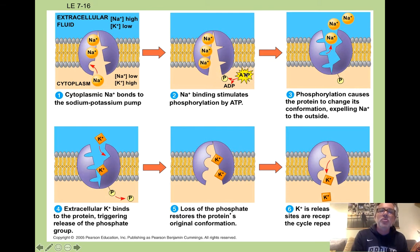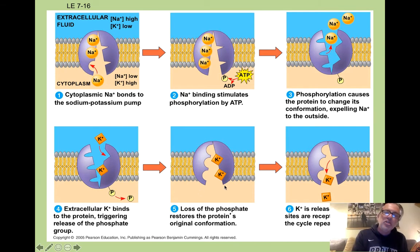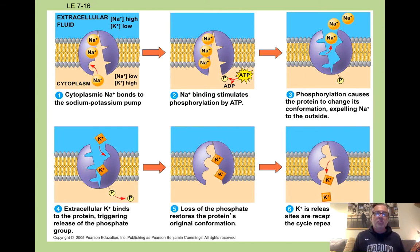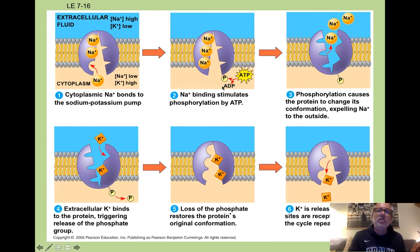Then the potassium can bind on the outside, and once it's bonded to the protein, the protein changes shape once again, kicks the potassium out, and now it's ready to receive more sodium. This is an energy-requiring process because the concentration of each ion is higher on the side it's being transported to. The ATP energy is used first to change the shape, and then a little more is used in the second step.